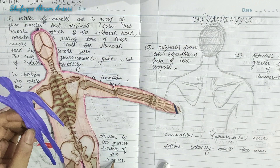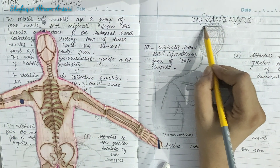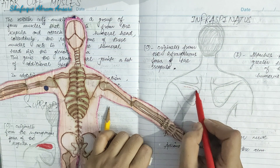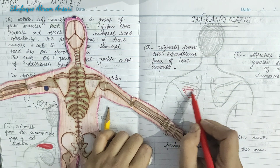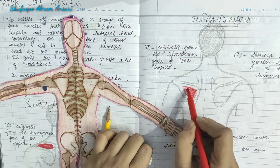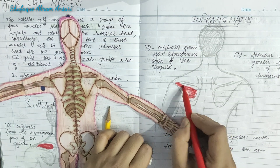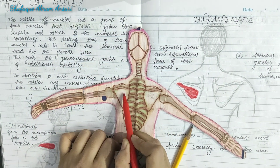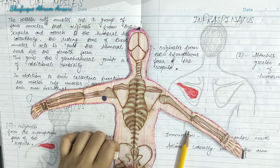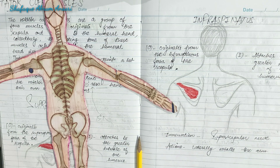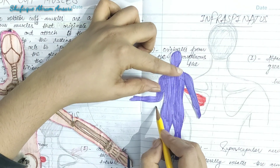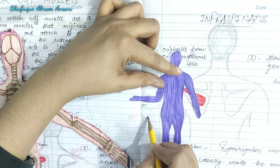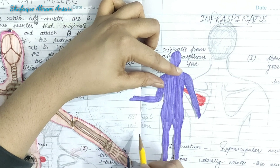The next muscle is the infraspinatus. 'Infra' means below, and 'spinatus' refers to the spine of the scapula. It originates from the infraspinous fossa of the scapula and attaches to the greater tubercle of the humerus. Its innervation is the suprascapular nerve, and its action is external rotation of the arm.